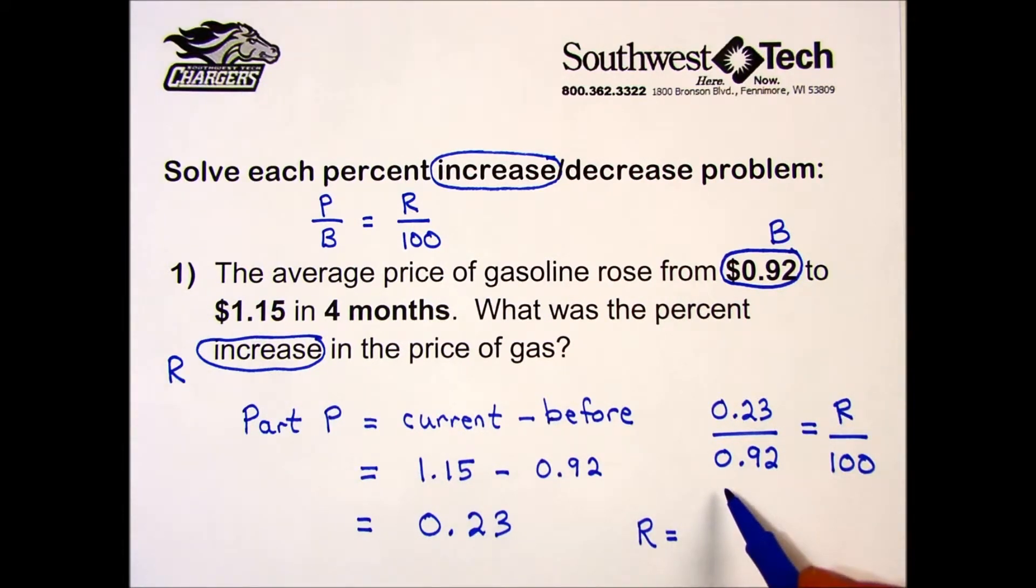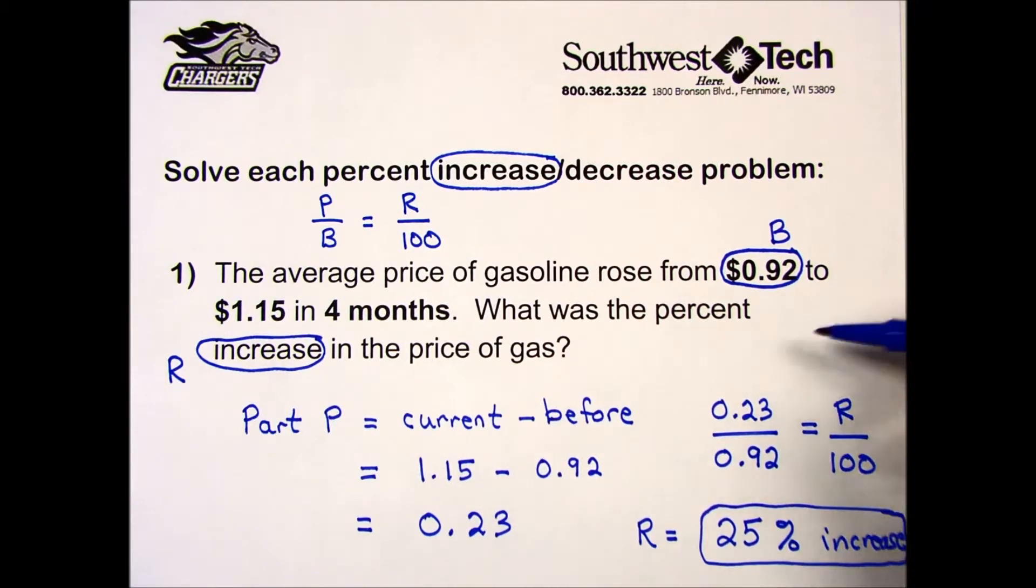My calculator gave me 25. I include a percent symbol, and that's my increase—a 25 percent increase.